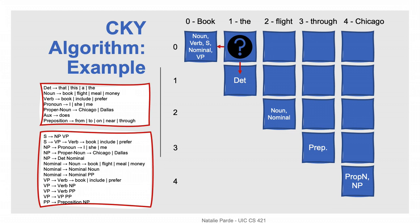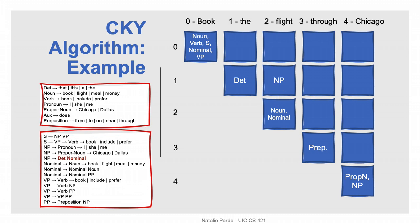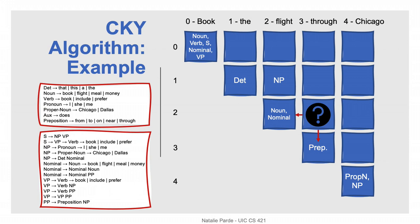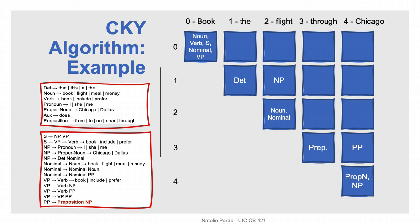To figure out whether 'book the' is a constituent, we need to determine whether there are any production rules that would match noun, verb, sentence, nominal, or verb phrase followed by determiner. It doesn't look like there are, so 'book the' must not be a valid constituent. We then check 'the flight,' looking for a determiner followed by a noun or nominal — we do find a match: a noun phrase. For 'flight through,' we want a noun or nominal followed by a preposition, but there's no match. Finally, for 'through Chicago,' we want a preposition followed by a proper noun or noun phrase, and we do find a match: a prepositional phrase.